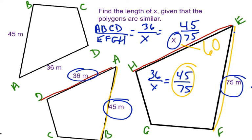So now we know the missing side is 60 meters. So again, using those ratios, using that fraction, you can determine the missing side.